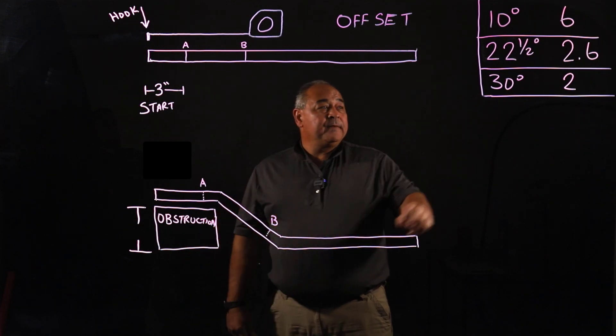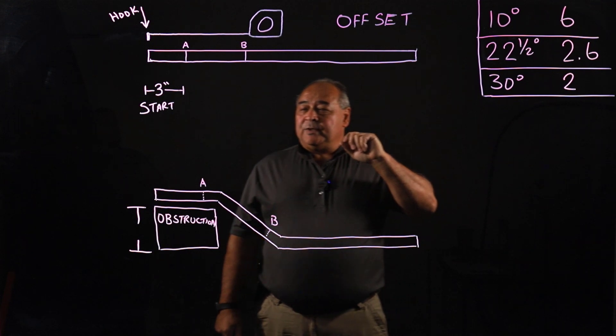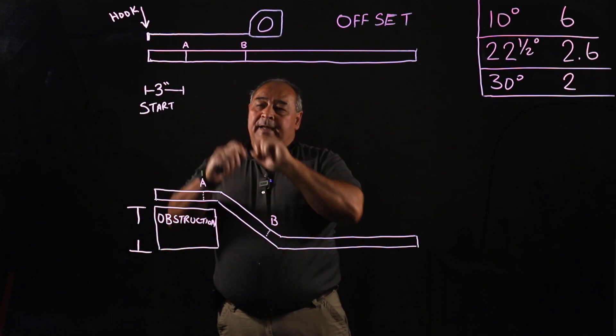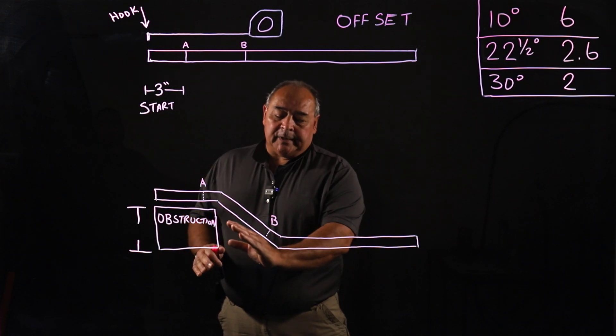If this is five inches, five times 2.6 equals 13 inches. So our measurements between A and B would be 13 inches. And that would get us a little bit closer on this open air gap here.